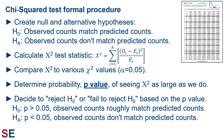Then we decide to reject the null hypothesis or fail to reject the null hypothesis based on the p-value. When the p-value is larger than 0.05, we would fail to reject the null hypothesis and conclude that the observed counts roughly match the predicted counts — any deviation is within the range that sampling error could easily cause. When the p-value is smaller than 0.05, we would reject the null hypothesis and conclude that the observed counts don't match the predicted counts. The deviation we see is more than sampling error alone could easily cause, so there is likely some other reason for the mismatch in our data.